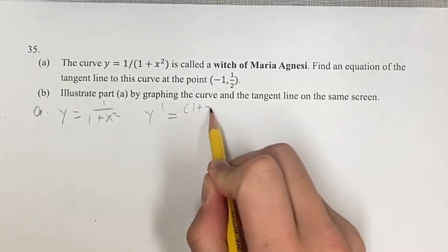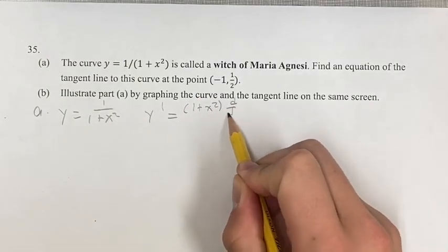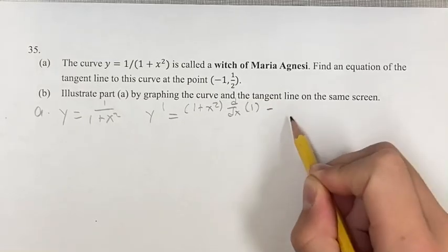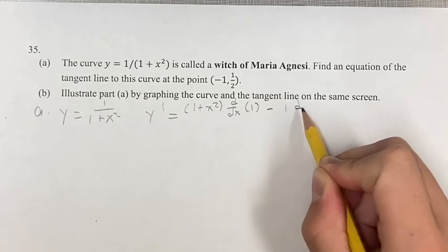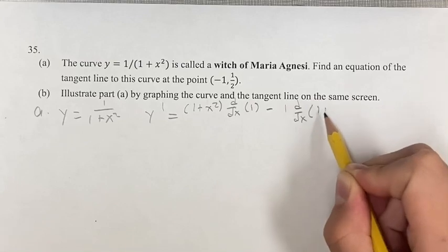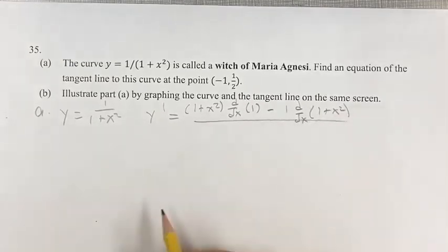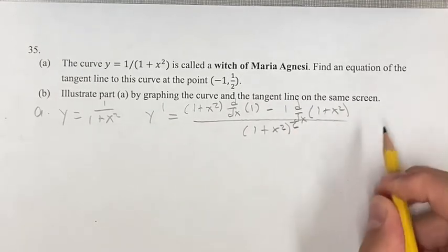So it's going to be the denominator times the derivative of the numerator minus the numerator times the derivative of the denominator over the denominator squared.